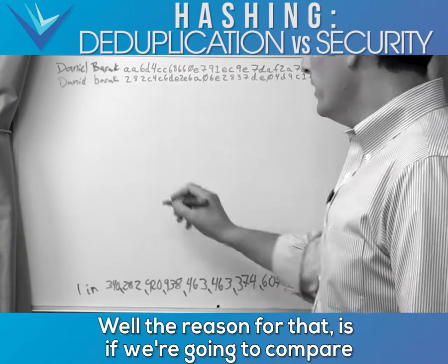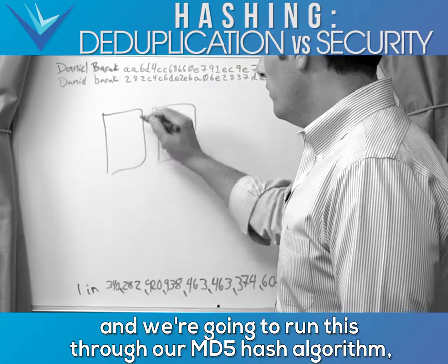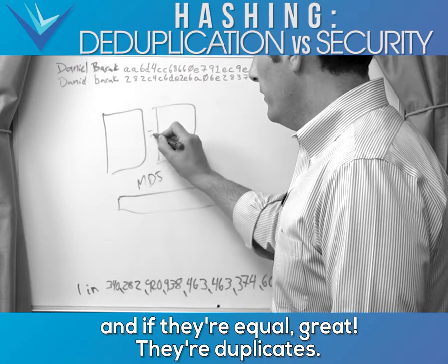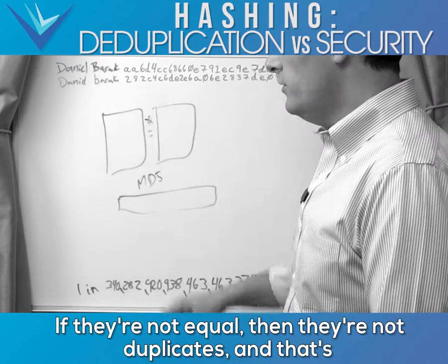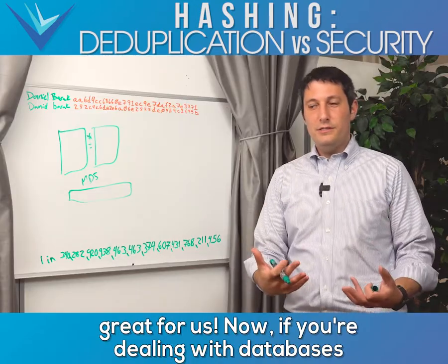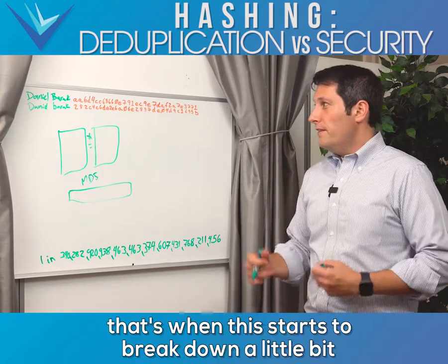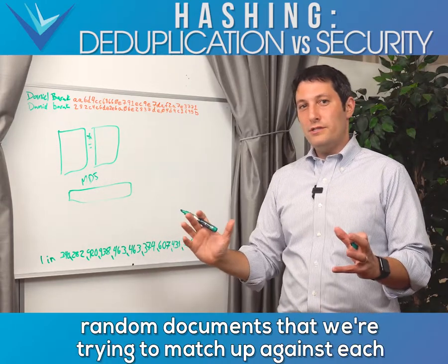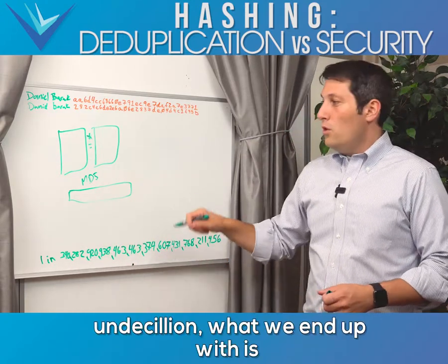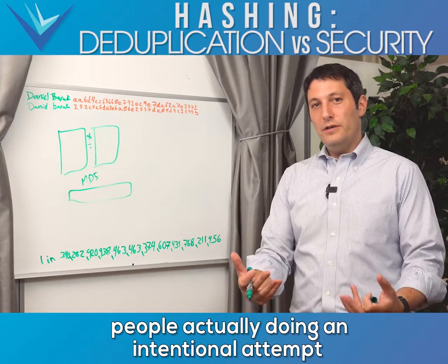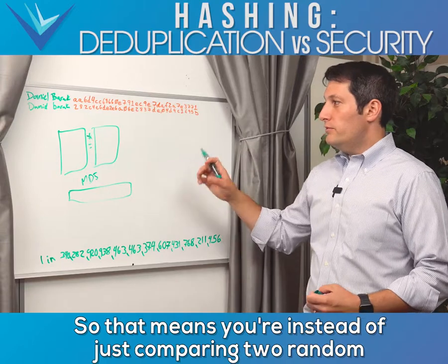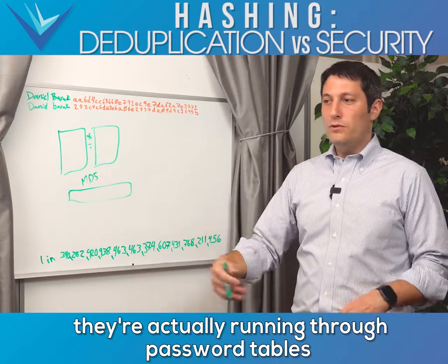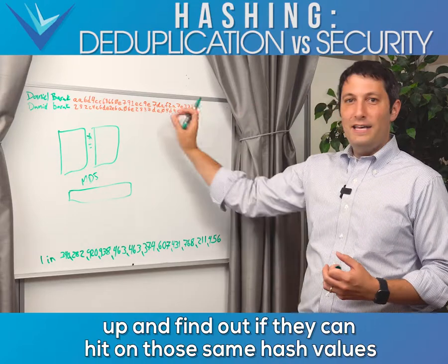Why are people in security having a problem with MD5 and SHA-1? If we're comparing two files and run them through the MD5 hash algorithm, equal hashes mean duplicates; unequal means they're not duplicates. But when dealing with databases storing usernames and passwords, this breaks down. Instead of comparing random documents where the likelihood is one in 340 undecillion, people are intentionally attempting to create a collision — running through password tables or hash tables trying to match up hash values.